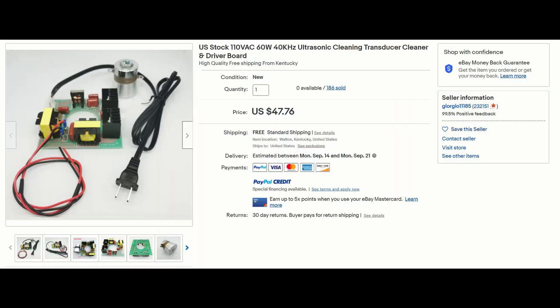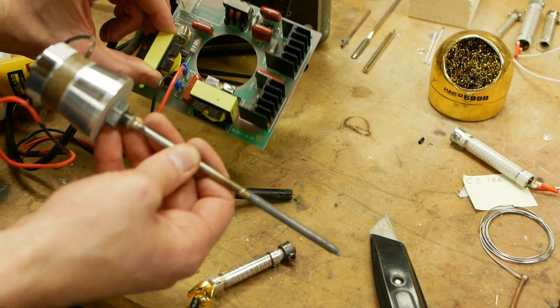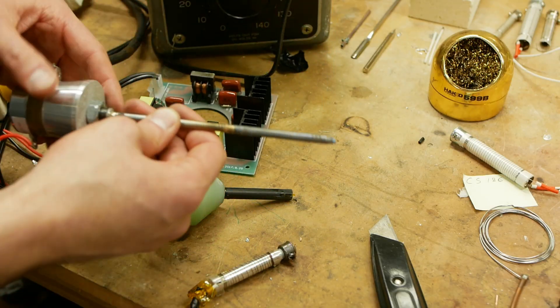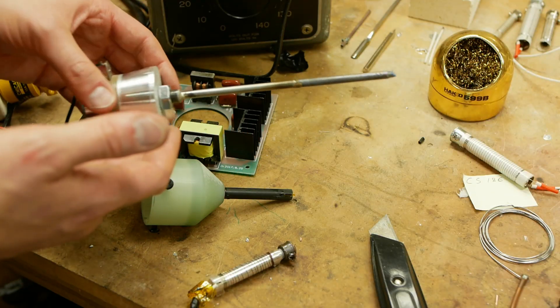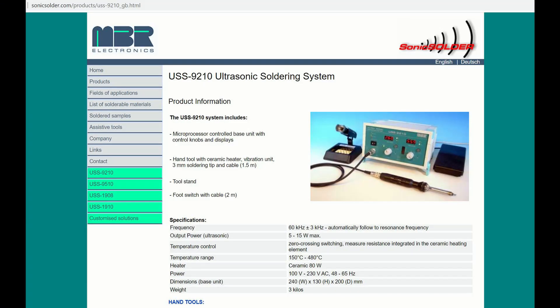I just went on eBay and got the transducer and the driver for $40 or $50 or something like that. But the commercial ultrasonic soldering irons are generally more in like the 10 to 15 watt range.